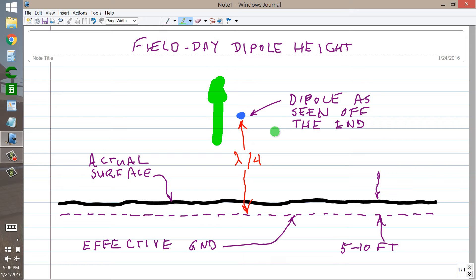They are going to be fairly close to you, and the optimum angle of radiation can, for all intents and purposes, be considered perpendicular to the surface of the Earth. The surface of the Earth, shown right here as a heavy black line, is actually 5 to 10 feet or so above effective ground, the plane of the effective ground.